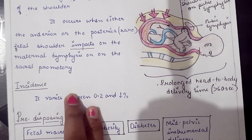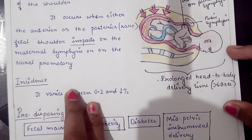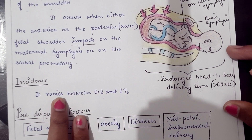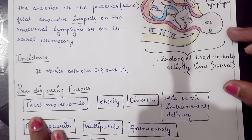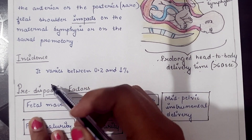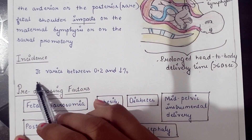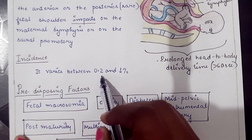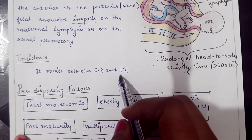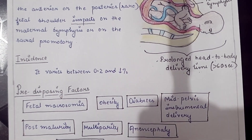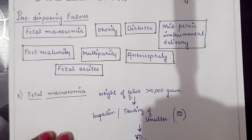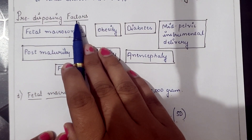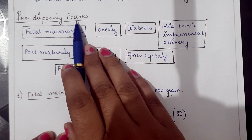Shoulder dystocia is also defined as a prolonged head-to-body delivery time of more than 60 seconds. The incidence rate of shoulder dystocia varies between 0.2 and 1 percent among all deliveries.